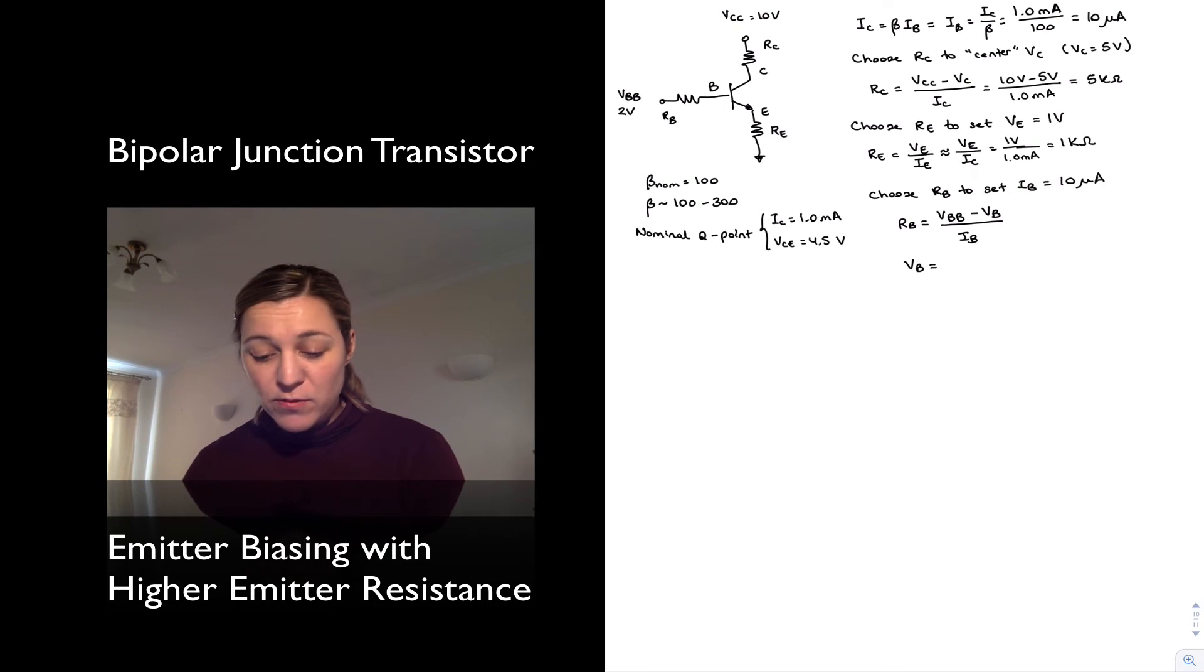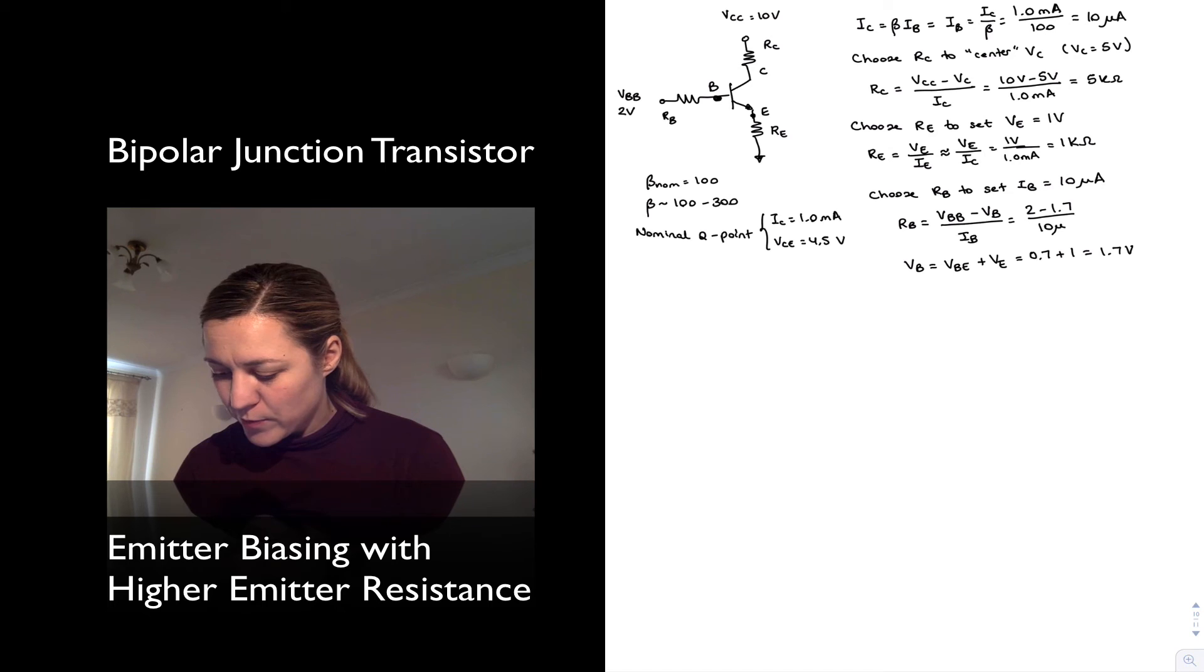And once again, notice that VB is the voltage at this point, and so it's going to be the sum of the base-emitter voltage VBE plus the emitter voltage. So VBE plus VE, or 0.7 plus 1. So in this case, RB will be 2 minus 1.7 volts divided by 10 micro. That gives me 30 kilo ohms.